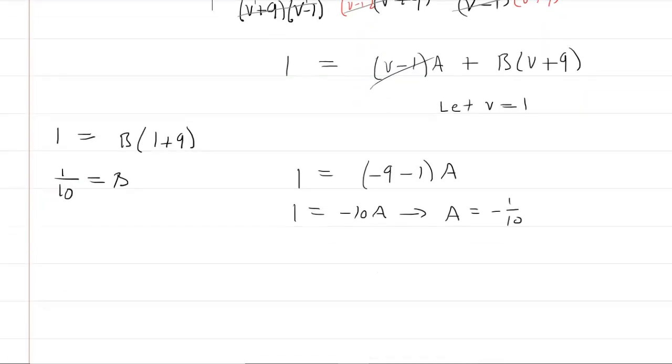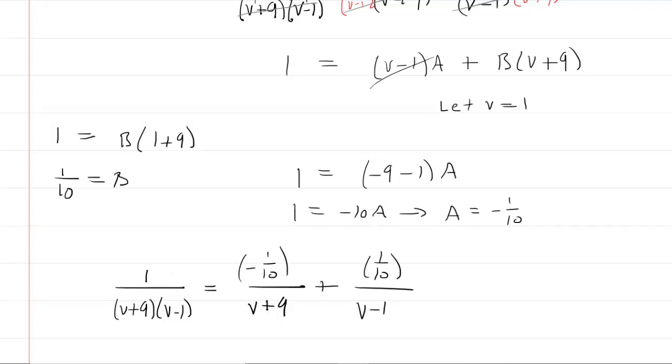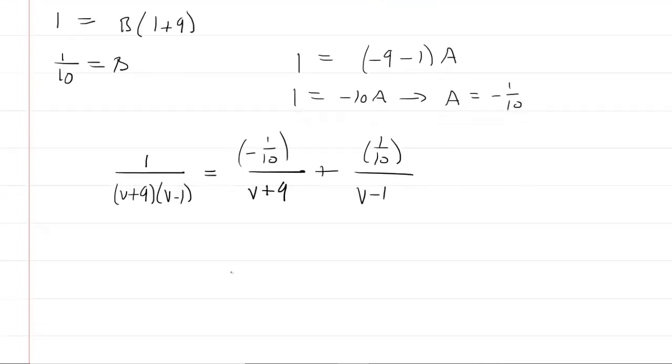And we can also begin to integrate it. So recall that we originally had 1 over v plus 9 times v minus 1. And then we had set that equal to A over v plus 9. But we now know that A is negative 1/10. And then we did plus B over v minus 1, but B is positive 1/10.